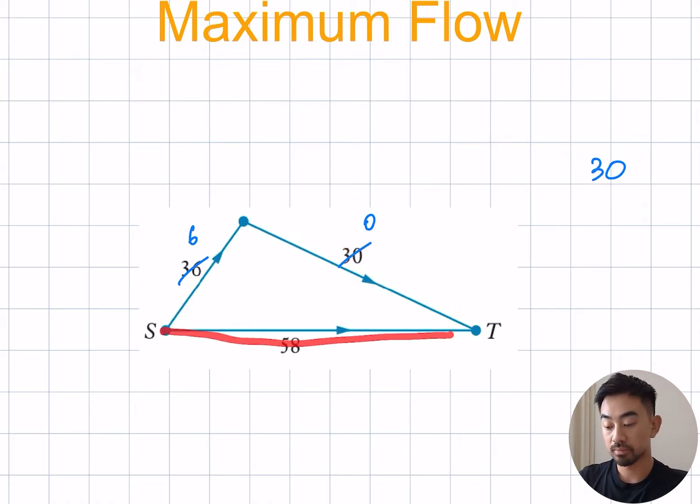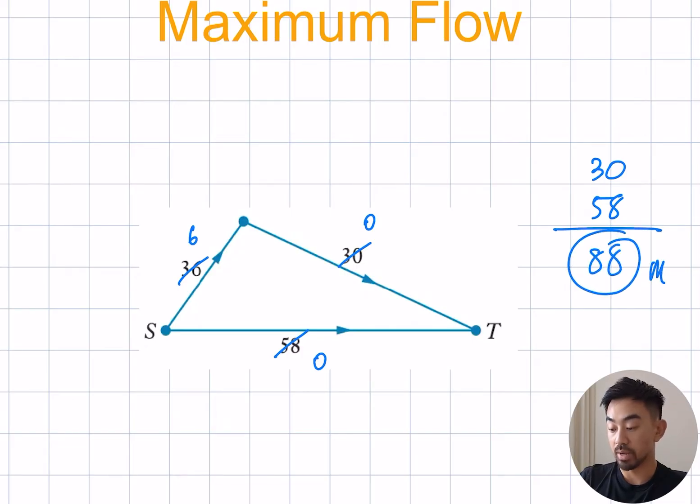So I go down below here. That's pretty straightforward because there's only one edge so it must be 58. So I cross out 58 and write 0 and now I'm done because I can't get any way from s to t. I add up these numbers which is 88 and this is what we call my maximum flow. Pretty straightforward right?